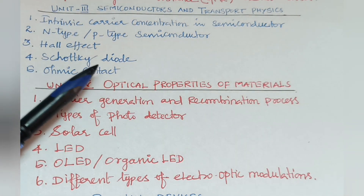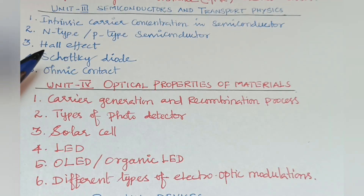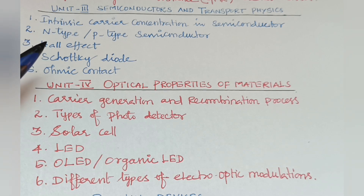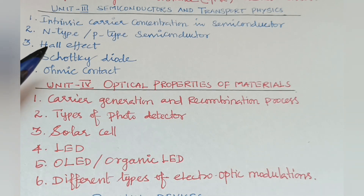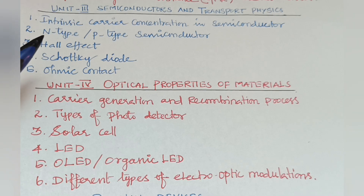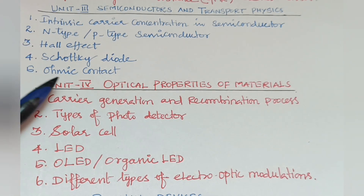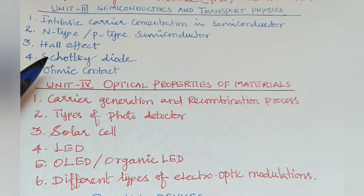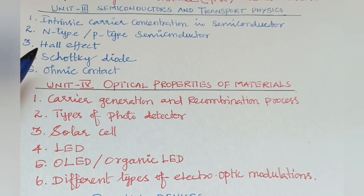The fourth question is the Schottky Diode — covering principle, construction, and working. The content includes principle, construction, working, advantages, disadvantages, and applications, worth five to six points. The fifth question is Ohmic Contact, also covering principle, construction, working, with a diagram and relevant derivations.